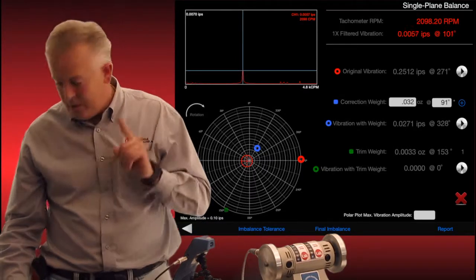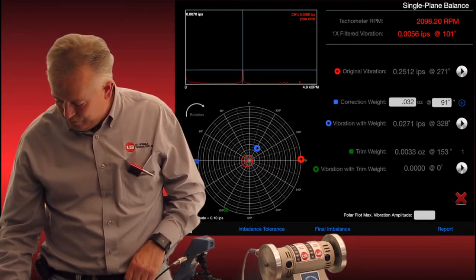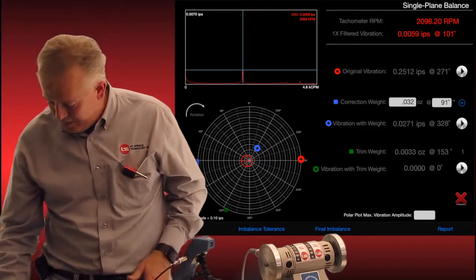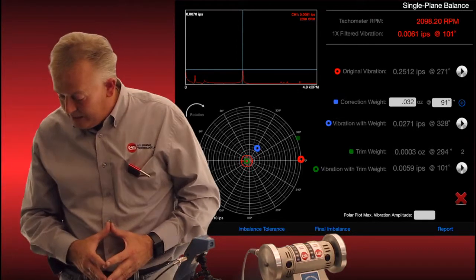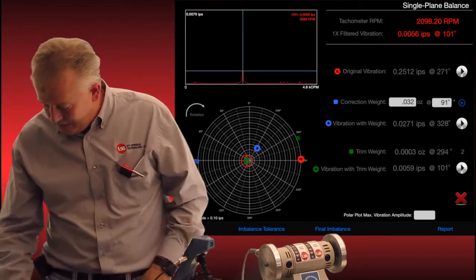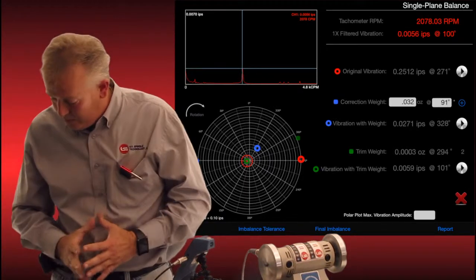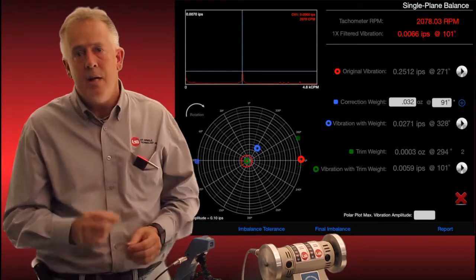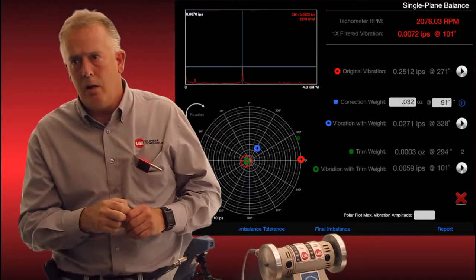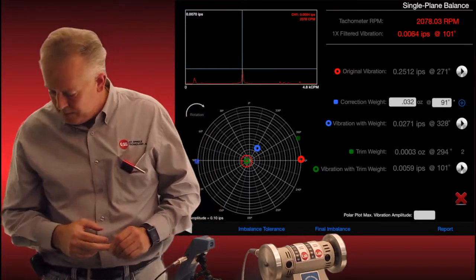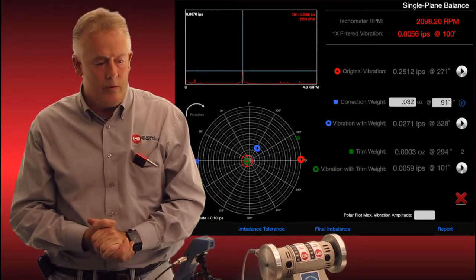If I did want to go further, I want to show you this last prompt down. I can hit the last prompt, which is vibration with trim weight, because it knows I put a trim weight there and it will give me another angle. 0.0059 is our amplitude now. And it's going to tell me to put 0.0003 ounces, which I don't know how you'd measure that little amount of weight, at 294 degrees. So that's when you come in to maybe a small piece of scotch tape or something that would weigh something so light to make that correction. So we're finished.